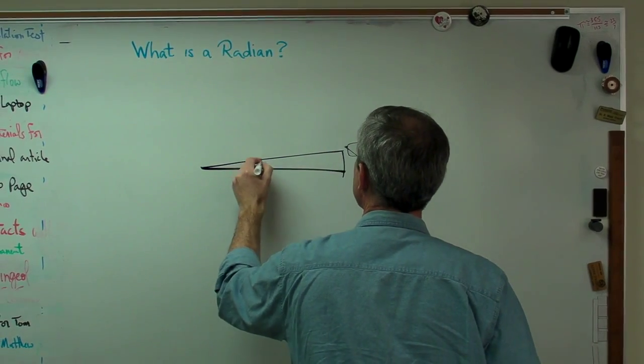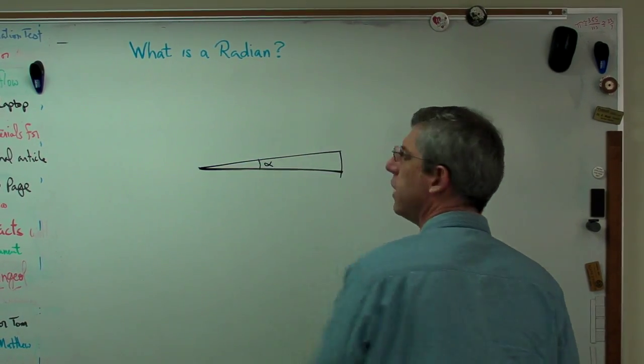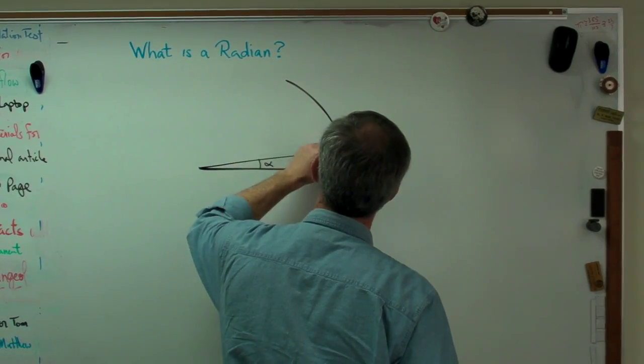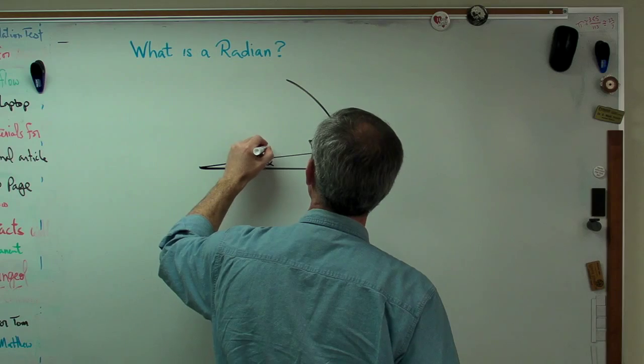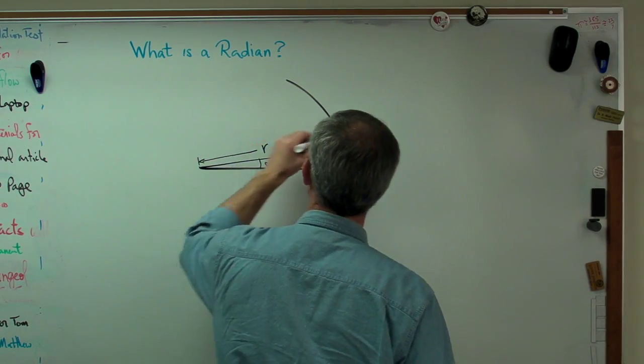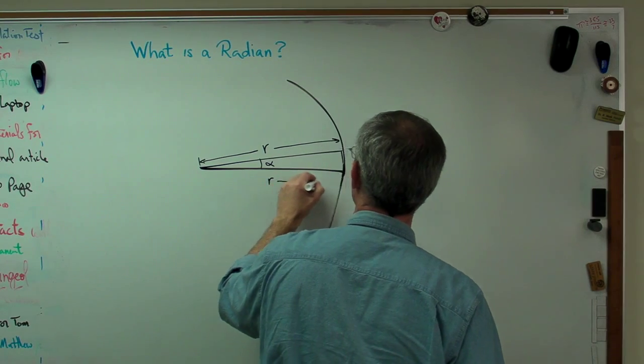Let's say we have a real small angle here, angle alpha, and this is part of a larger circle with radius r. Okay, and that's radius r as well right there.